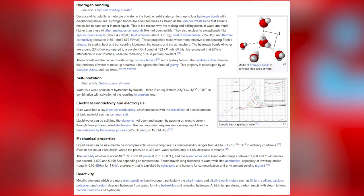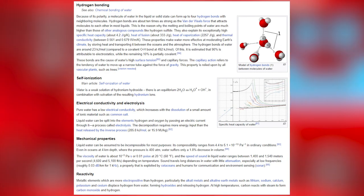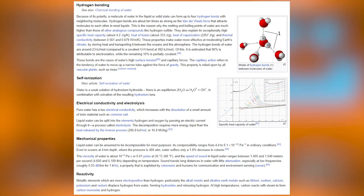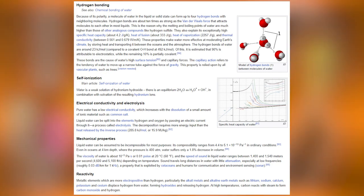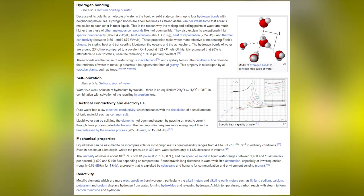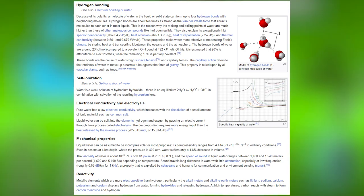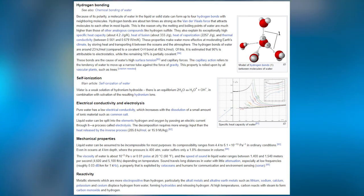Metallic elements more electropositive than hydrogen, particularly the alkali metals and alkaline earth metals such as lithium, sodium, calcium, potassium and cesium, displace hydrogen from water, forming hydroxides and releasing hydrogen. At high temperatures, carbon reacts with steam to form carbon monoxide and hydrogen.